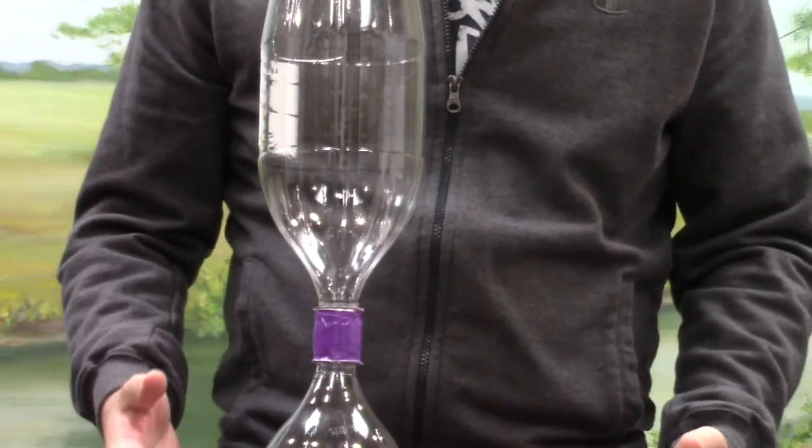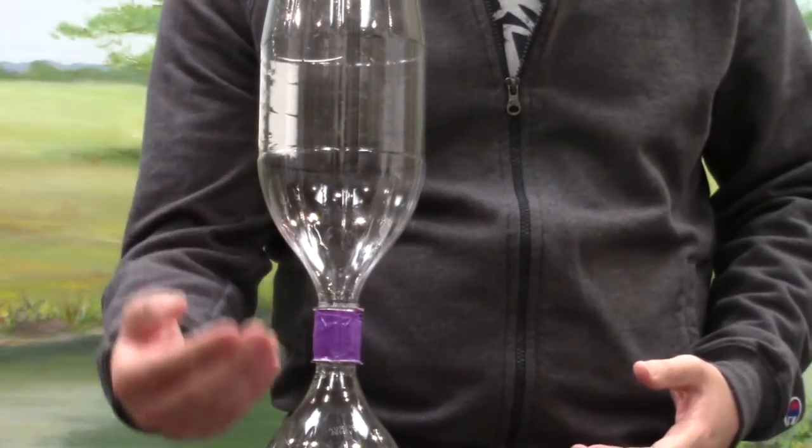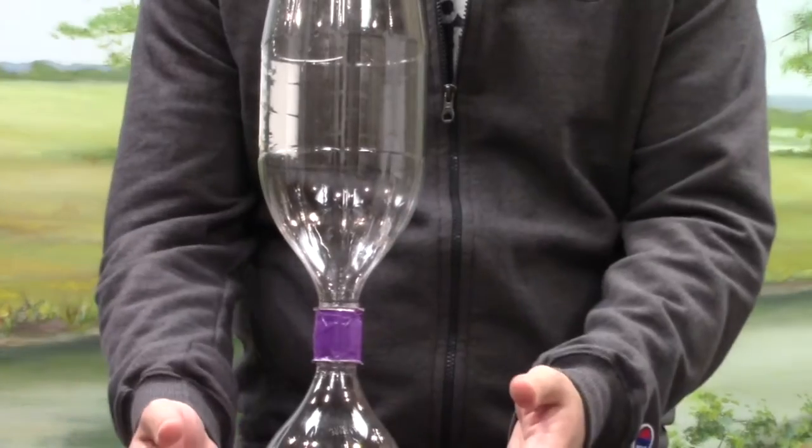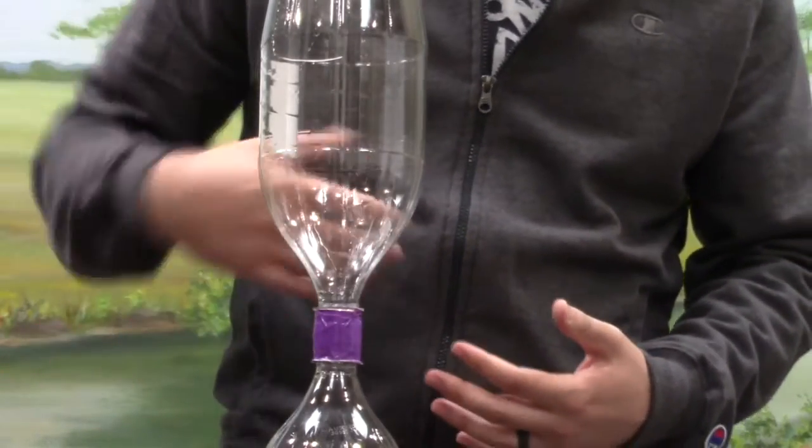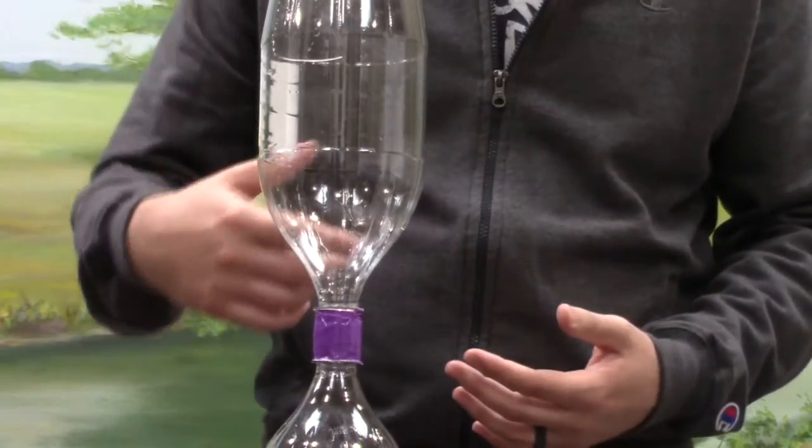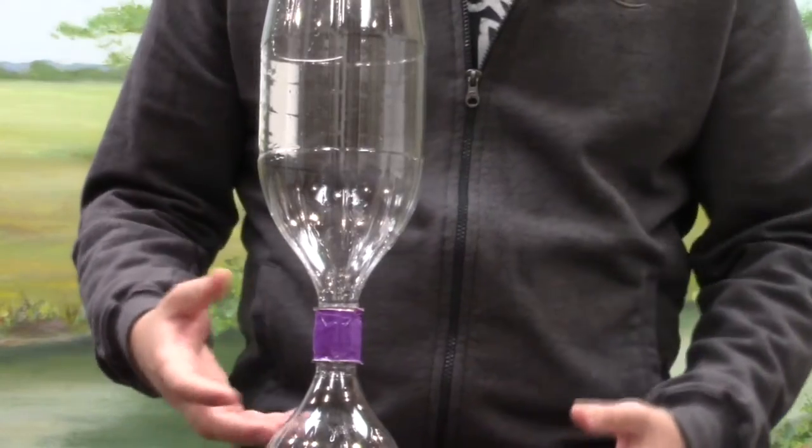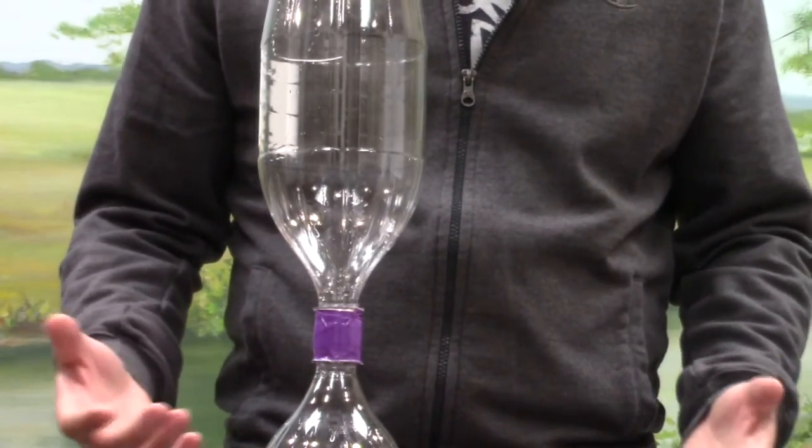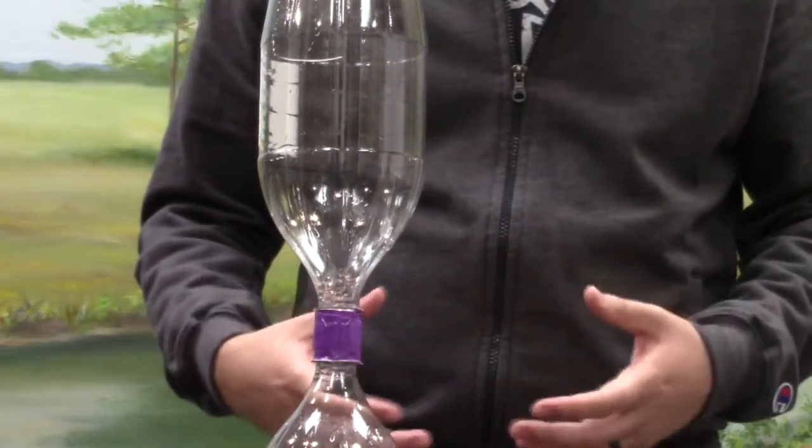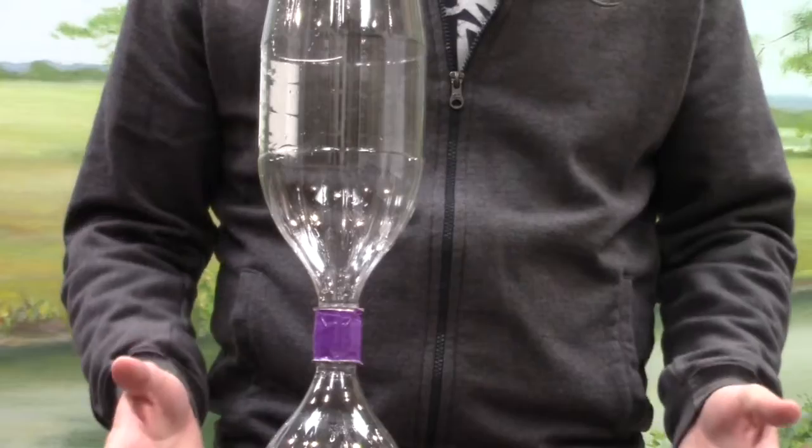Another cool thing you can do is maybe get a stopwatch and time how long it takes for the water to drain from the top to the bottom. And see like if you start the spin harder and make it go faster. Does that actually mean that the water drains out faster? Or is it just spinning faster? These are some cool things that you can look at and help you understand the way that water and other fluids move.